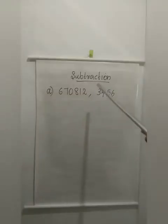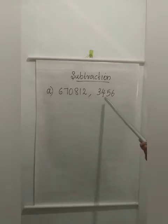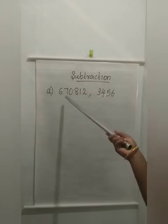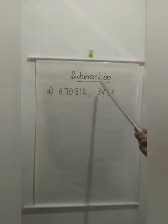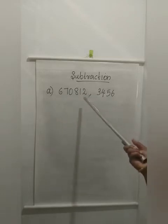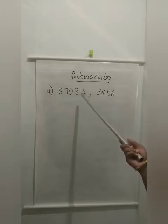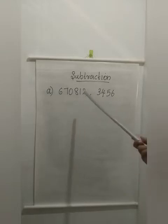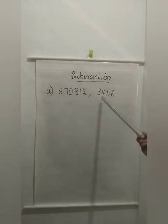Now we can discuss subtraction. First example: the two numbers given here are 6,70,812 and 3,456. The first rule of subtraction means we can subtract a smaller number from a larger number. So always write the larger number first. By looking itself we can see which is the larger number. Here, since the two numbers are having different number of digits, we can compare it easily. This is a 6-digit number and this is a 4-digit number.